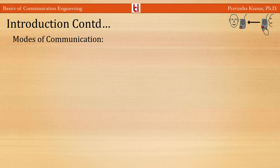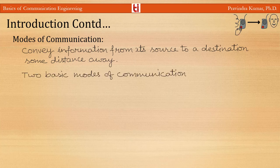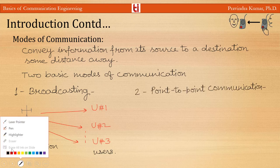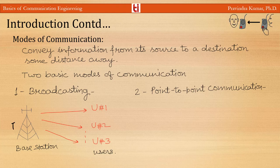There are two basic modes of communication. First is broadcasting, which involves the use of a single powerful transmitter and a number of receivers that are relatively inexpensive to build. Here the information-bearing signal flows in only one direction — for example, FM radio and TV broadcasting. As shown in this figure, there is one transmitter at the base station, with signal flowing in one direction to a number of users.